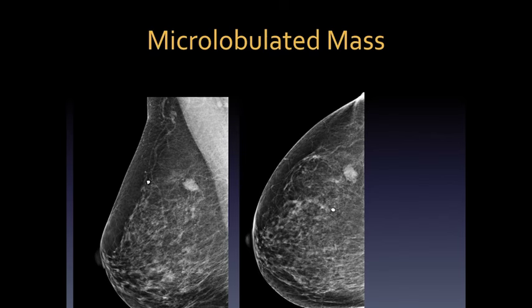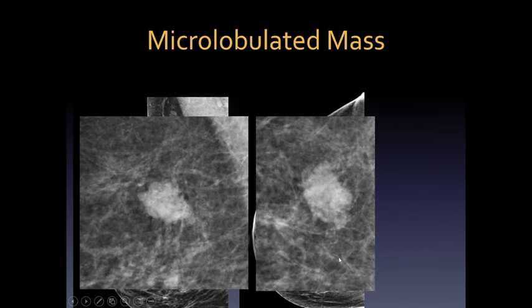Back to the margins — what about microlobulated? This is where we see more than three lobulations. Some people have called this the Ritz cracker appearance. It's a little bit indistinct and should cause concern. This would be a BI-RADS 4B, and this turned out to be a small invasive ductal carcinoma.